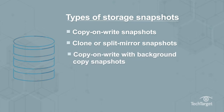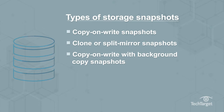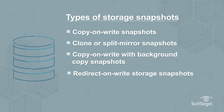Copy-on-write with background copy snapshots take a snapshot of data from a copy-on-write operation, then use a background process to copy data to the snapshot storage location. Redirect-on-write storage snapshots redirect writes to storage provisioned for snapshots and only write changed data instead of copying all data.